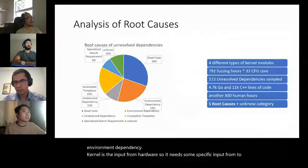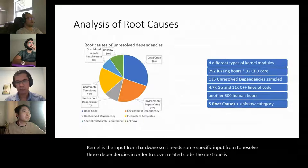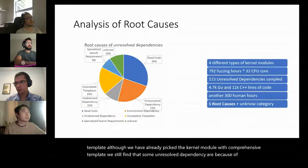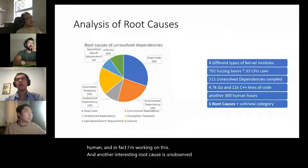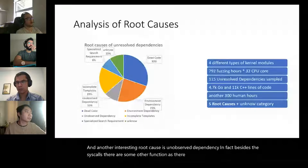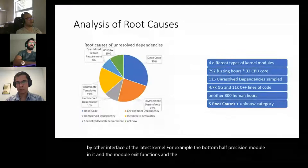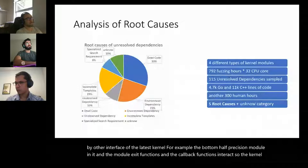The third root cause is incomplete templates — even with comprehensive templates for selected kernel modules, we still find some unresolved dependencies due to bugs in templates, so we need techniques to automatically generate templates instead of manually. The fourth is unobserved dependency: besides syscalls, some functions can be triggered by other Linux kernel interfaces, for example bottom-half functions, module init/exit functions, and interrupt callbacks. The kernel fuzzer needs to consider all those different interfaces and combine them together in order to achieve better coverage.